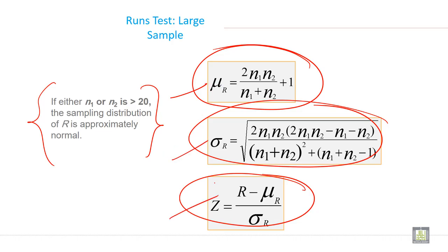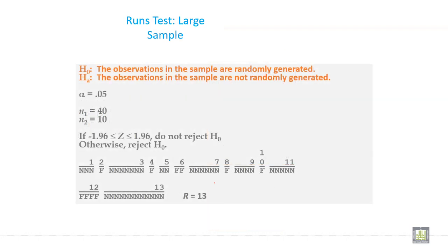So here, this is the formula you can apply to calculate the value. This is the Z formula and this is the formula for standard deviation. This is the formula for mean randomness, for standard deviation, and this is the formula to calculate Z value.